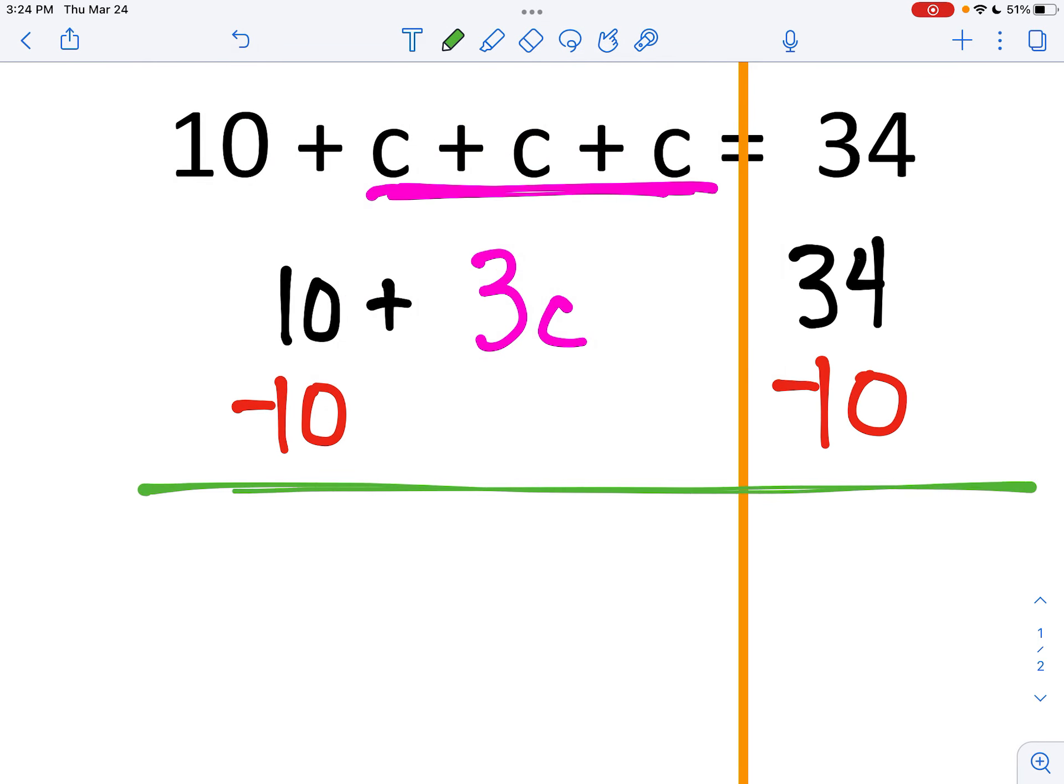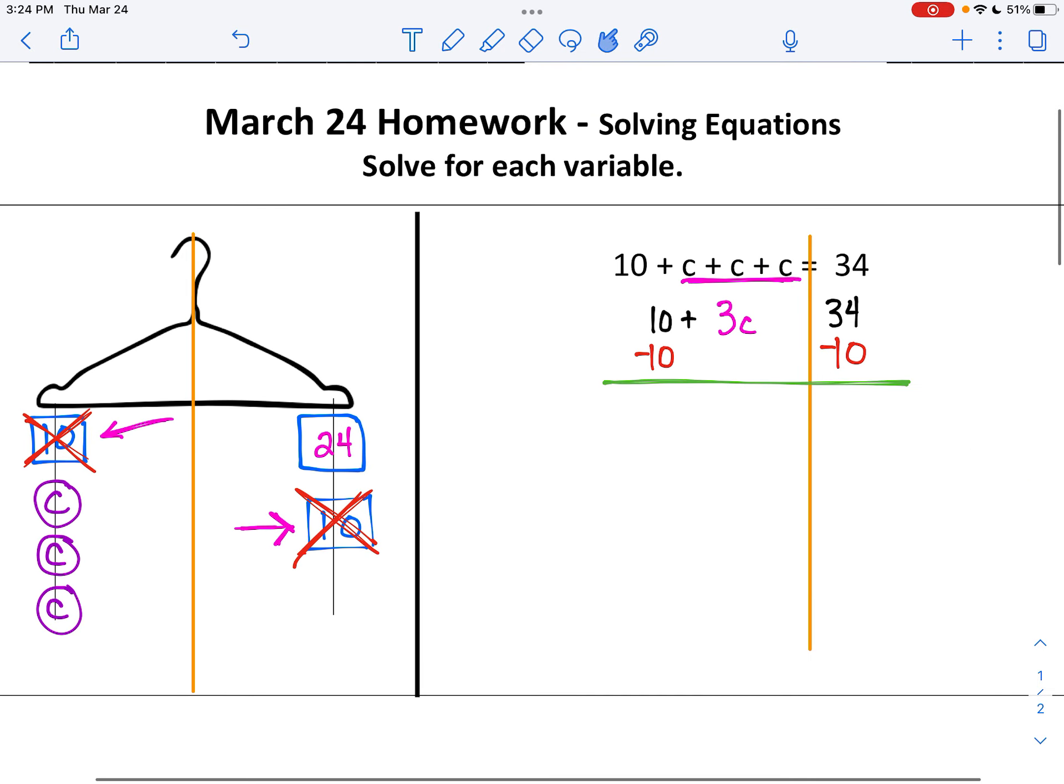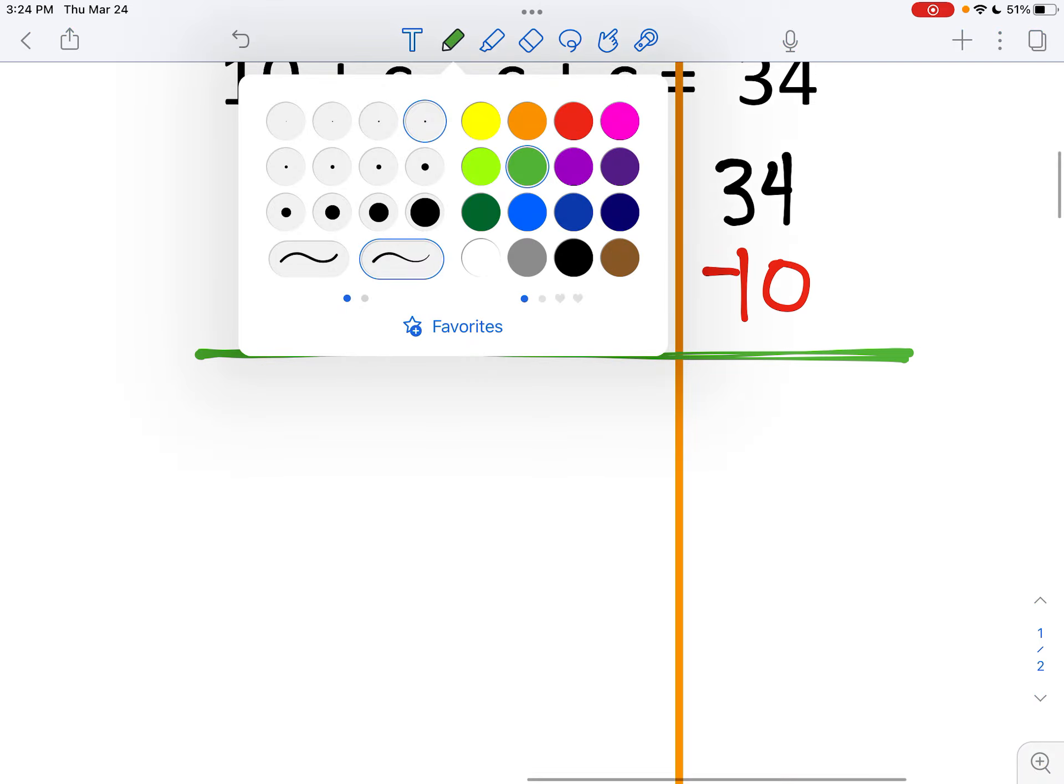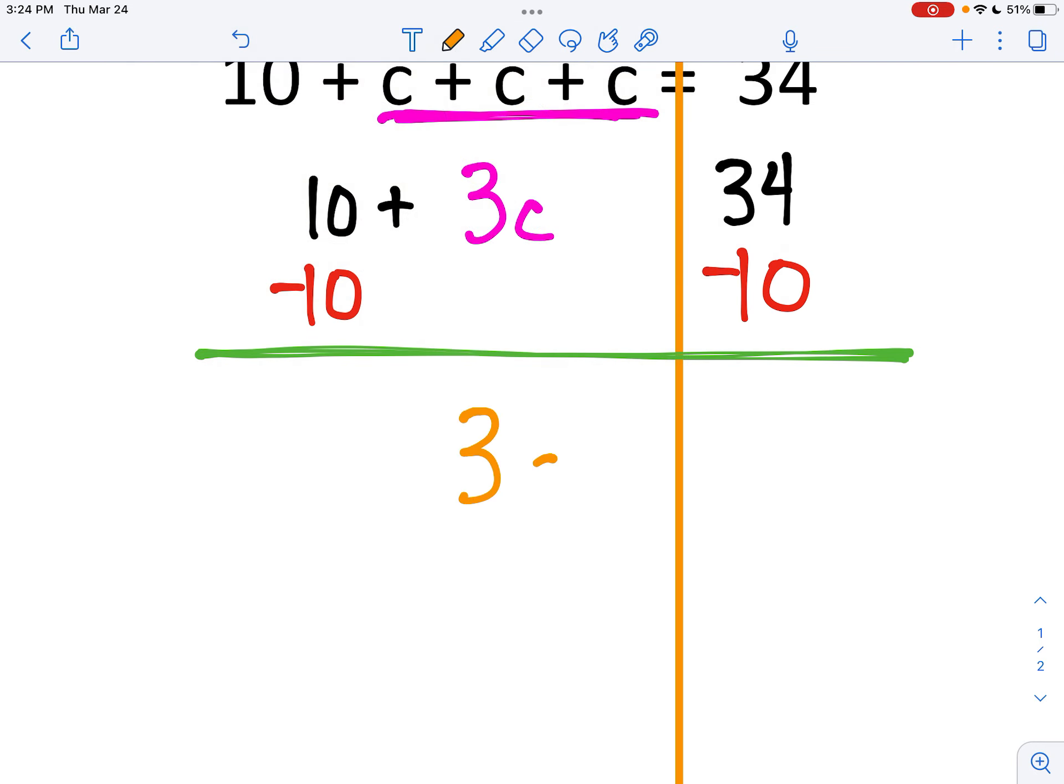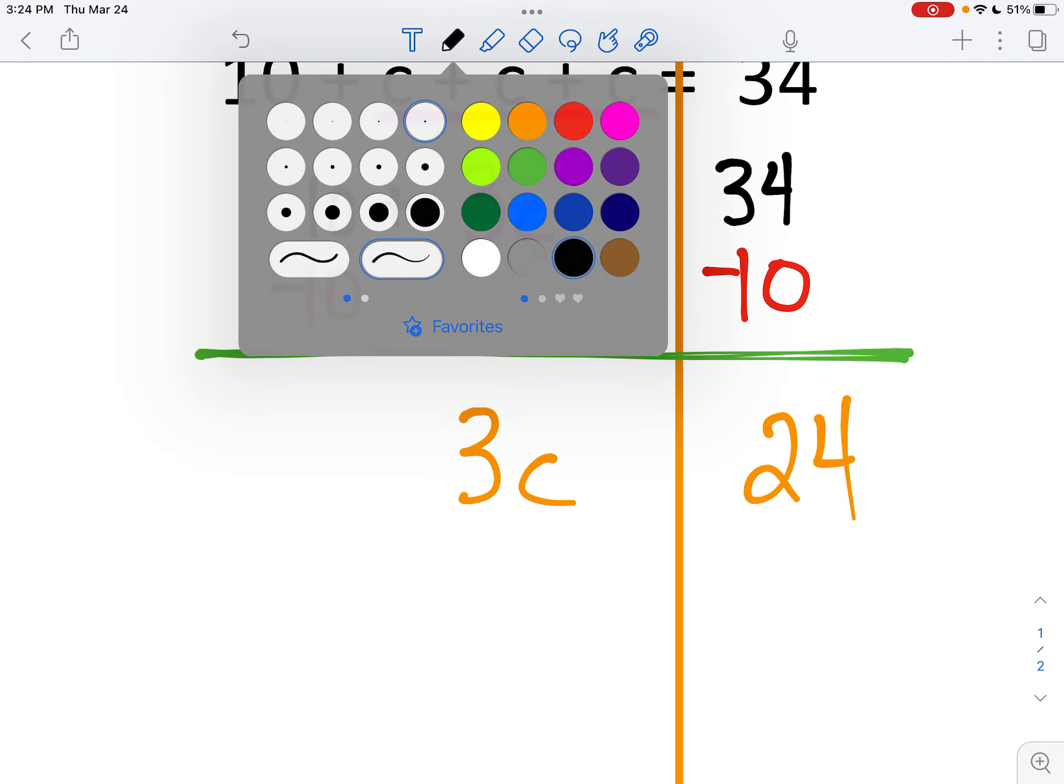Now I'm going to think about what's still left on the hanger. When I look back at the hanger, the left side still has three C's, and the right side has 24. So that's what I'm going to write. The left side has three C's, and the right side has 24. Equals.